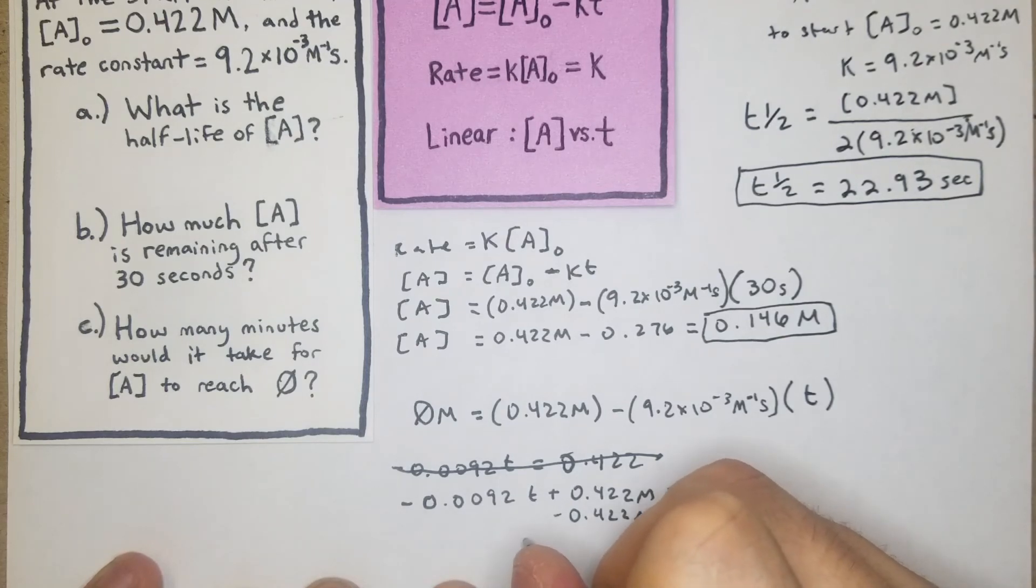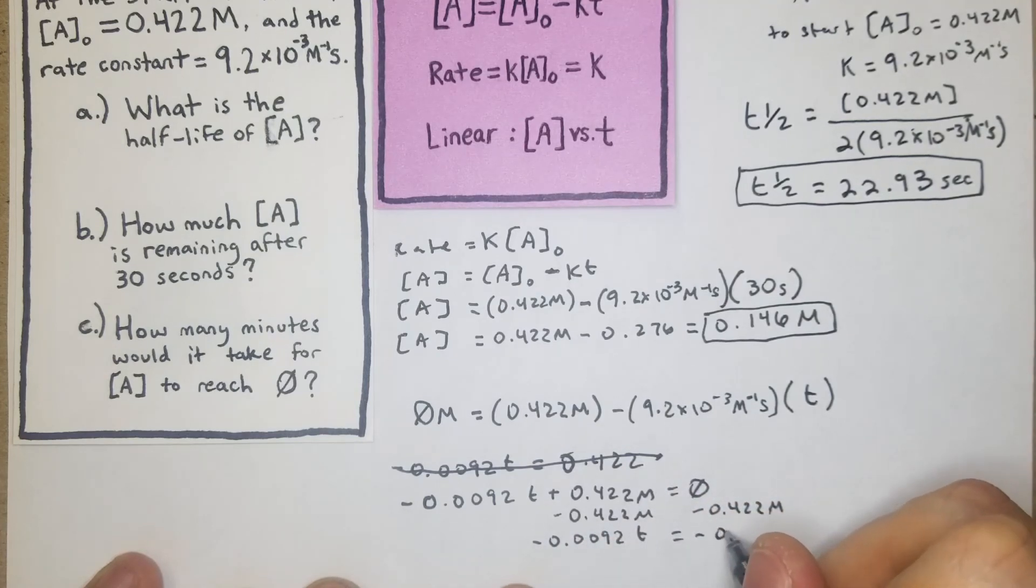And then we get our 0.0092t is equal to negative 0.422 M, and then we'll just divide both sides by 0.0092.